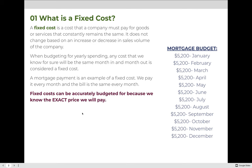A mortgage payment is an example of a fixed cost — we pay it every month and the bill is the same every single month. Fixed costs can be accurately budgeted for because we know the exact price we'll pay. In this column chart, budgeting for the entire year, we would know that in January we need to budget $5,200 for the mortgage, and that same amount applies in August, December, May, October — it's always the same. On January 1st of the year, we can tell you exactly how much we will pay in December of that year, and if you can say that, it is a fixed cost.